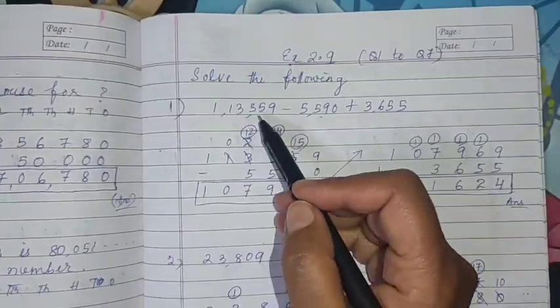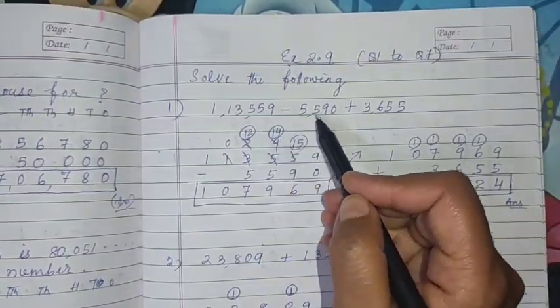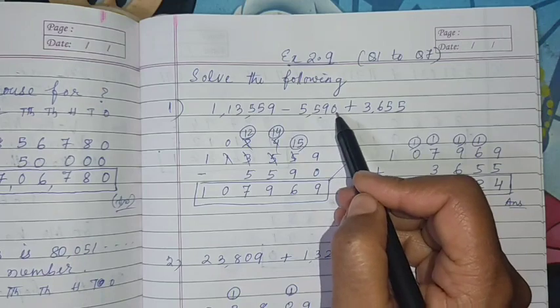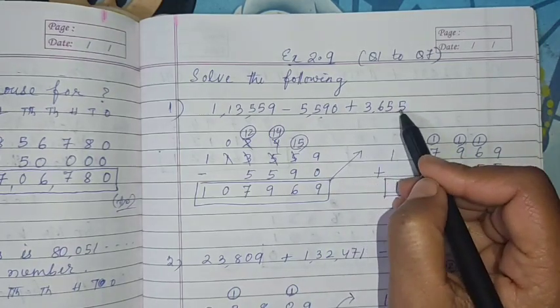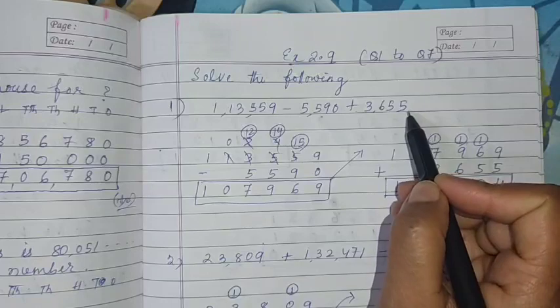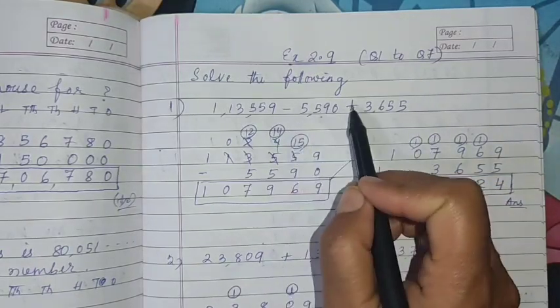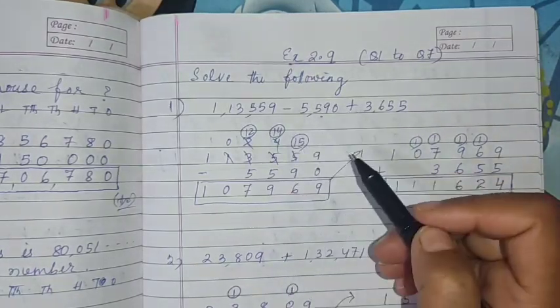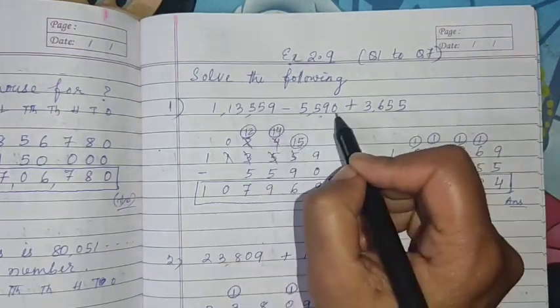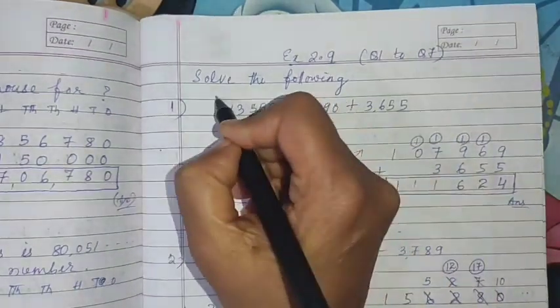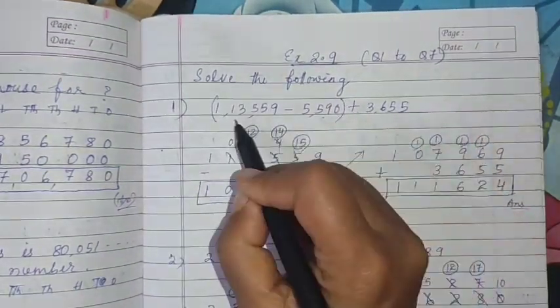1,13,559 minus 5,590 plus 3,655. We can't do all 3 together - minus and plus we can't do together, subtraction and addition. First you take these first two numbers. First two numbers subtraction - arrange the number then subtract.